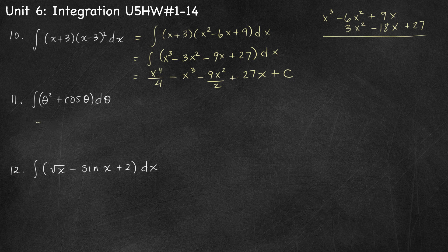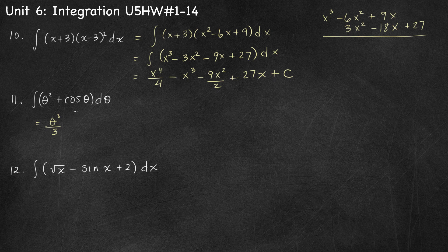Number 11, our variable is theta, which acts the same way as x. So treating theta as the variable: the antiderivative of theta squared is theta cubed over 3. For cosine theta, I think of it as: the derivative of sine is cosine, so the antiderivative of cosine theta is sine theta. Answer: theta cubed over 3 plus sine theta plus c.